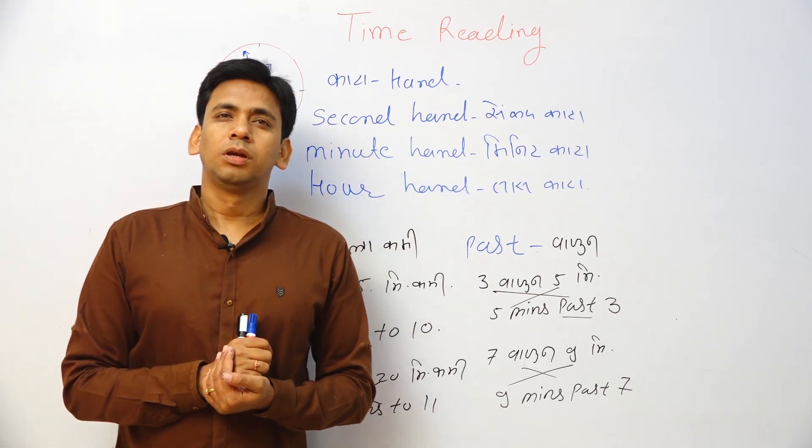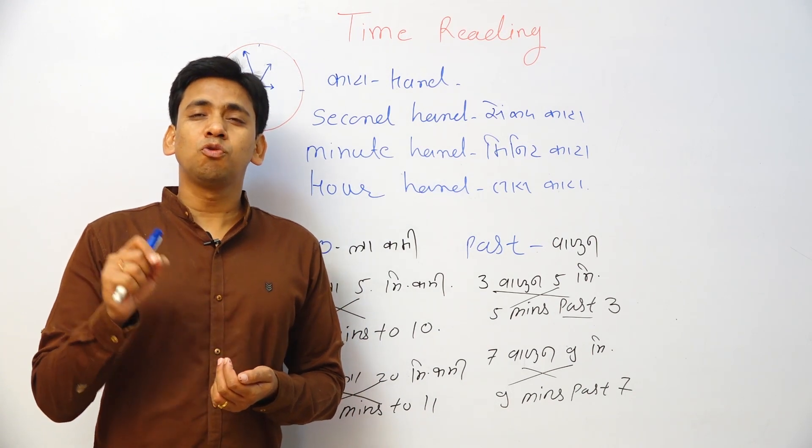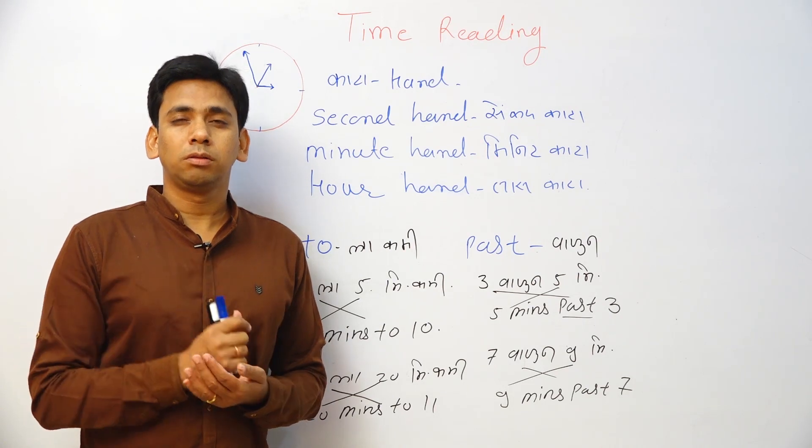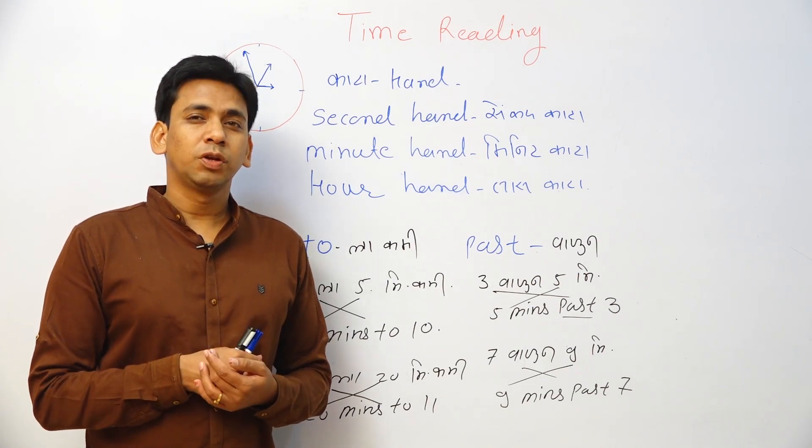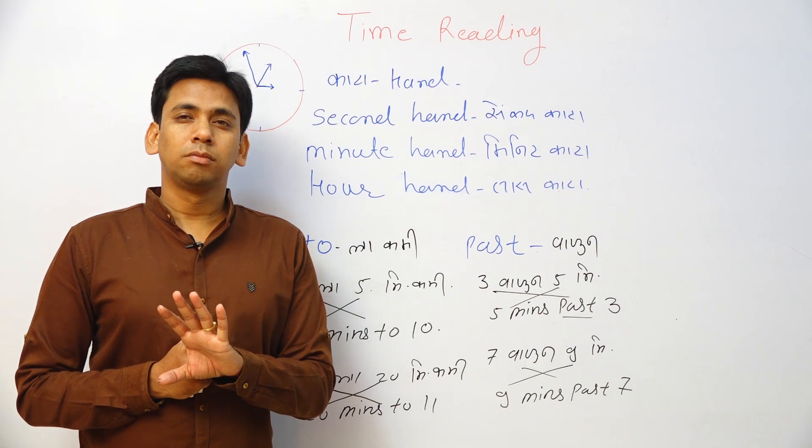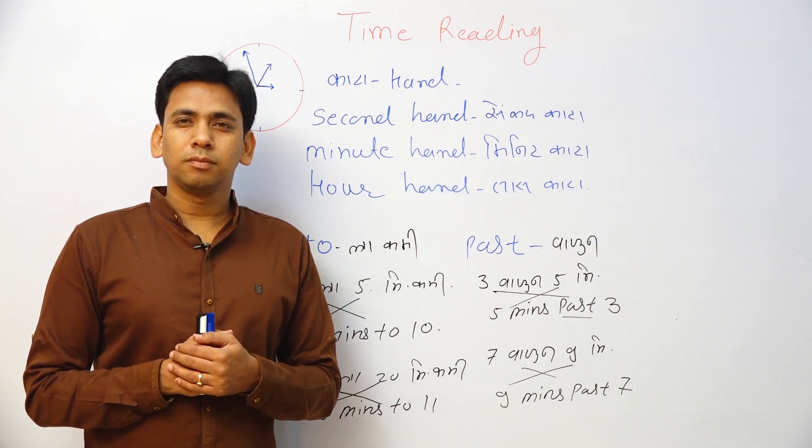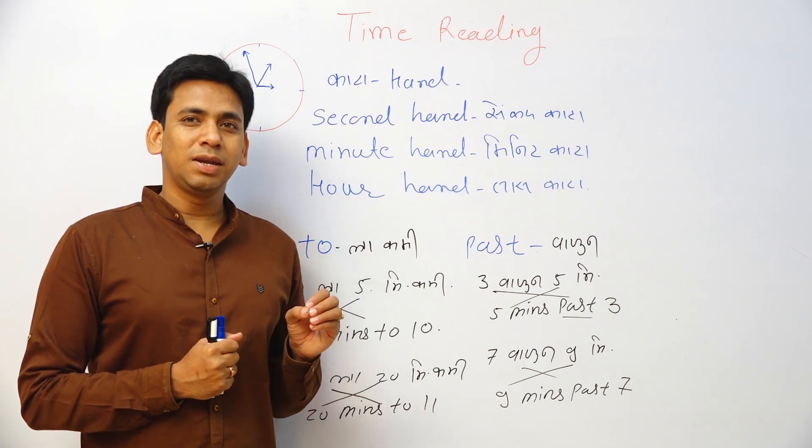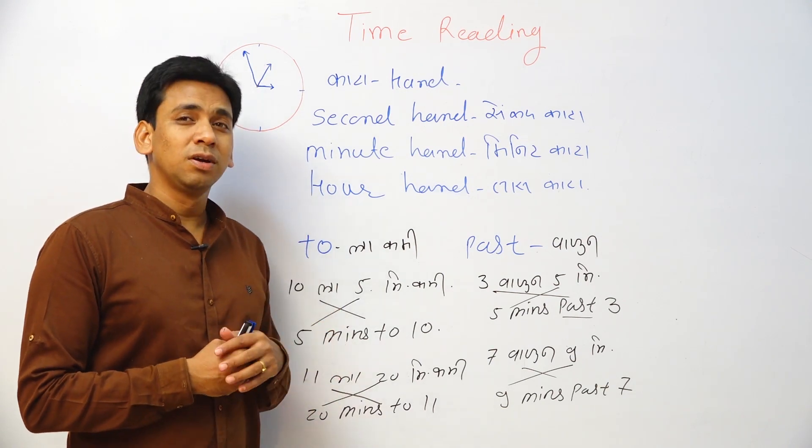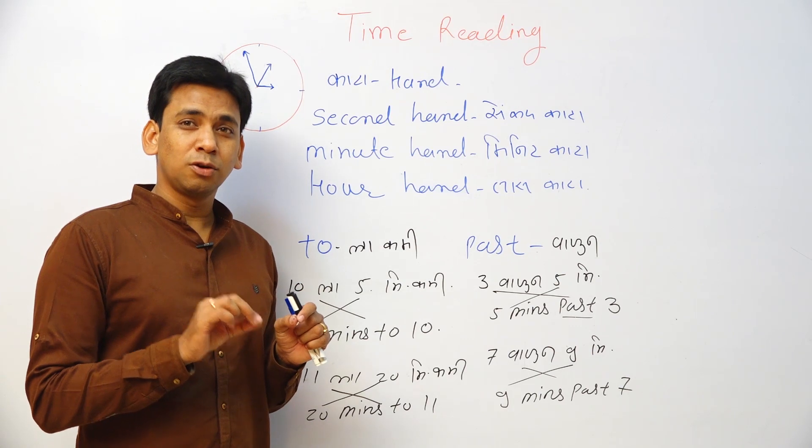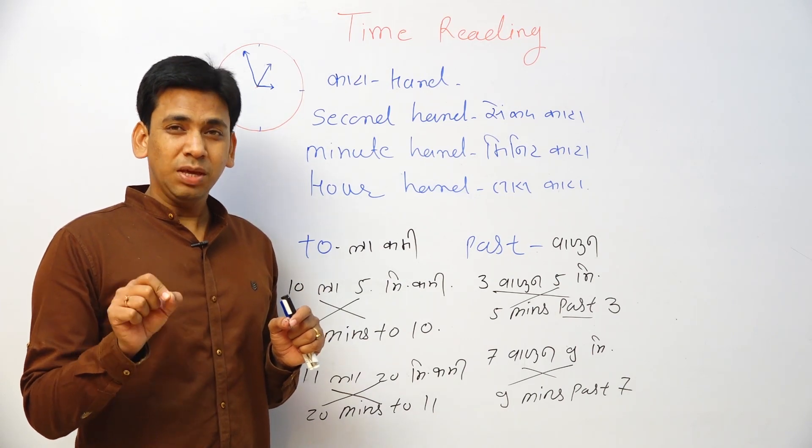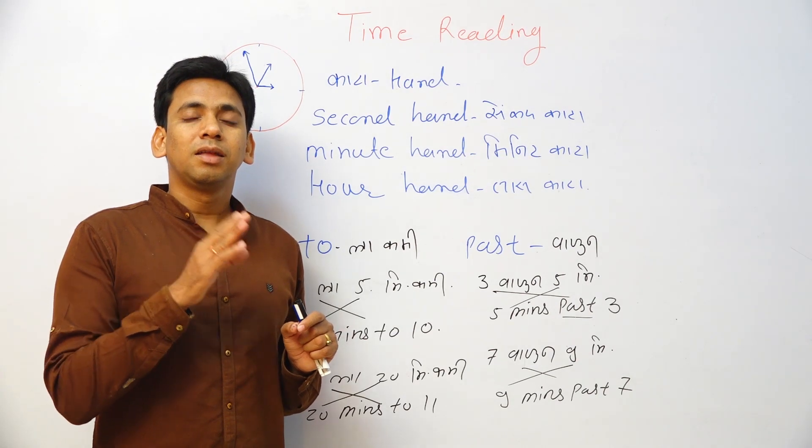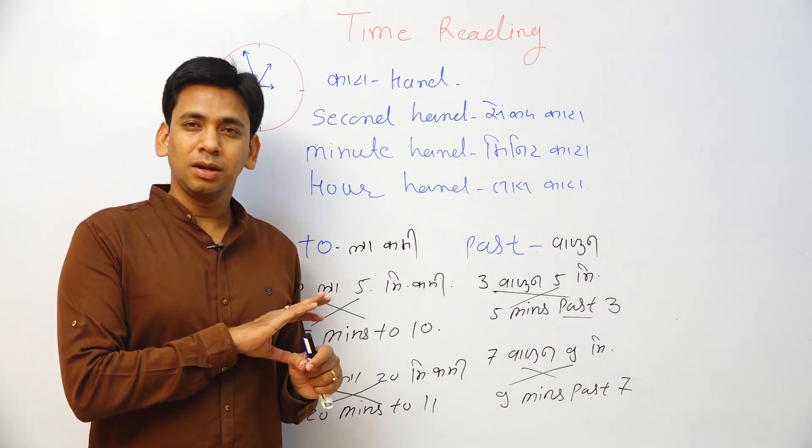Again, twenty minutes to one. Twenty minutes to one. Give me answer. Twenty minutes to one means what? Twenty minutes 'to' means minus. Minus from what? One. One o'clock minus 20 minutes. Clear?